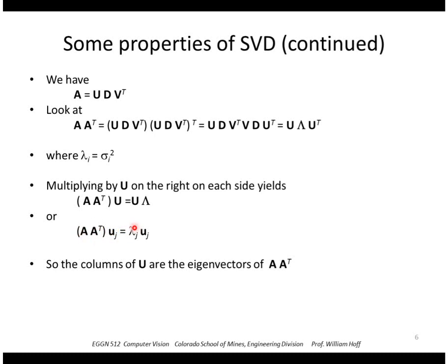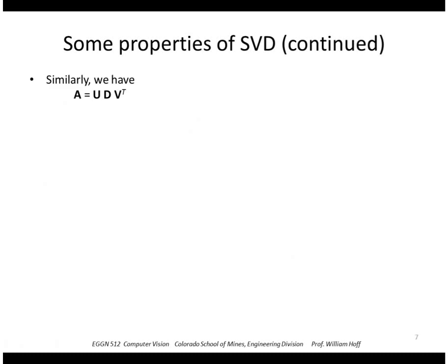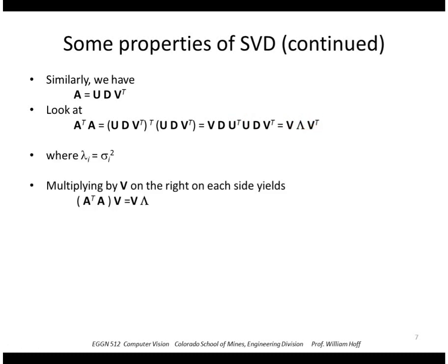We can do the same thing with forming the matrix A transpose A. Same sort of thing, we'll just substitute in what the definition of SVD is. Now we get U transpose U in the inner part and that becomes identity, so the result is just V Λ V transpose. Similarly, we multiply V on the right on each side and we get this, and this again becomes an eigenvalue eigenvector system where the V's now are the eigenvectors of A^T A and the lambdas are the eigenvalues of A^T A.